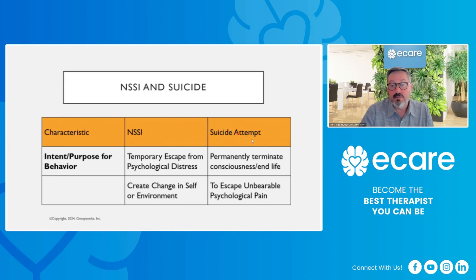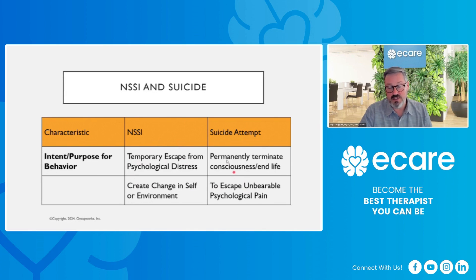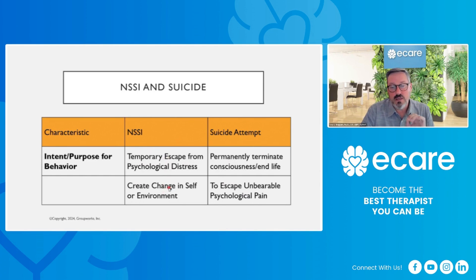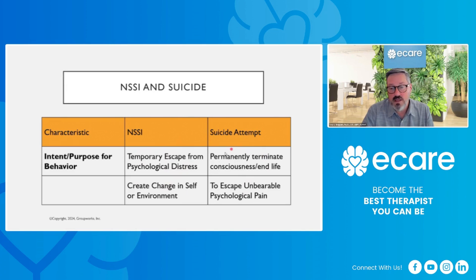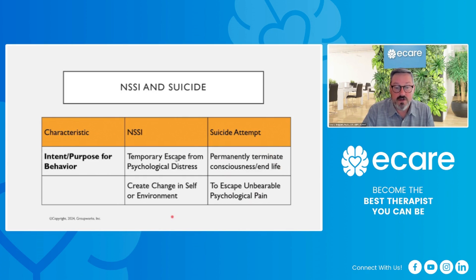The intent with a suicide attempt is to escape unbearable psychological pain — very different intents and purposes. With non-suicidal self-injury, the person is attempting to get a temporary escape from distress or create a change in themselves or their environment, whereas the person engaging in a suicide attempt is attempting to permanently terminate consciousness or end their life. That is another key difference.